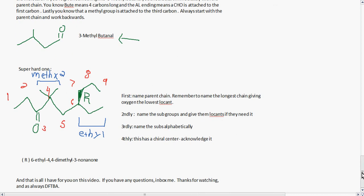Here is one that's more challenging. First, name the parent chain, remember to name the longest chain giving oxygen the lowest locant. Second, name the subgroups, give them locants if they need it. Third, name the subgroups alphabetically, arrange them on your paper. Fourth, recognize any chiral centers and acknowledge it in the name. So this would be R, 6-ethyl-4,4-dimethyl-3-nanone. You'll get more complex ones like this on exams for sure. Just be really careful to follow your steps of 1st, 2nd, 3rd, and 4th.